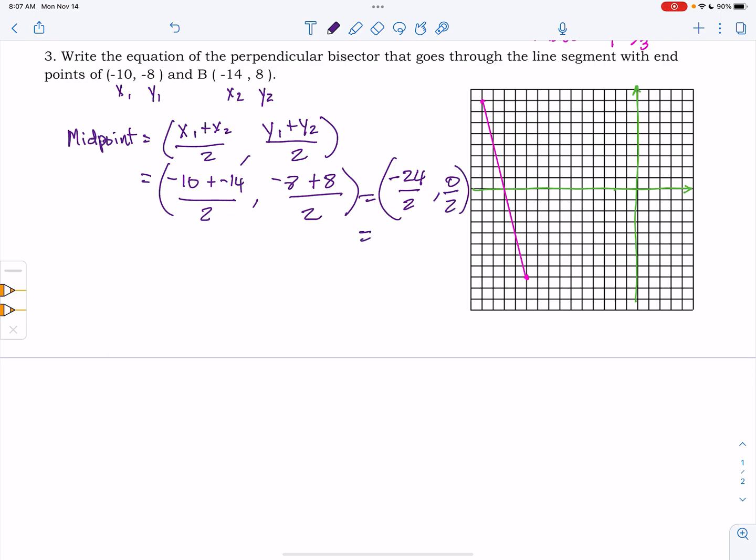which then gives us negative 12, comma, 0. And so now we see that that's that point right here, right in the middle of that segment, which makes sense.